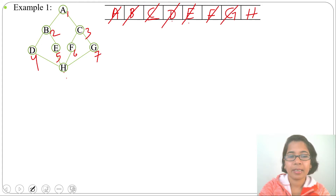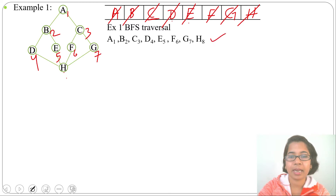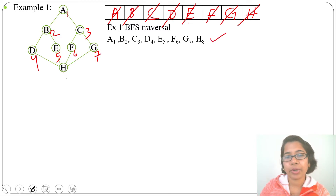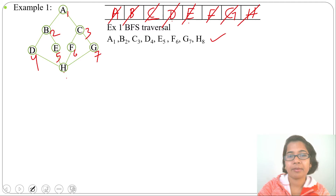H's adjacents are D, E, F, and G — all already visited — so we delete H. After BFS traversal we got this sequence with its timestamps. In DFS we use two timestamps: discovery time and finishing time. But in BFS, the sequence in which we insert is the same sequence in which we delete, so we can consider that as both the discovery time and finishing time — they have the same sequence.